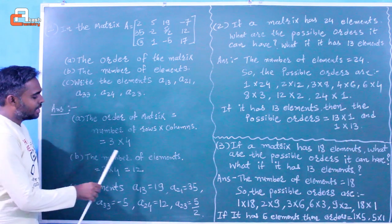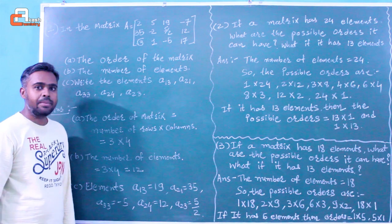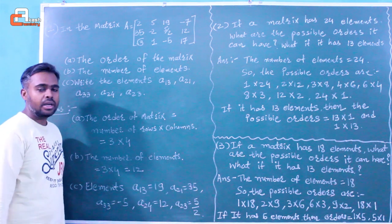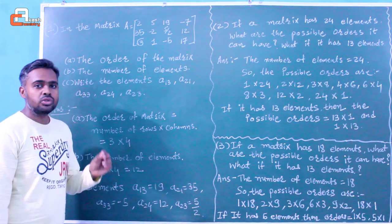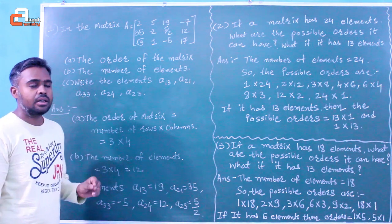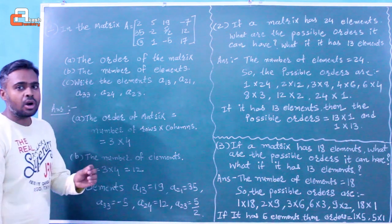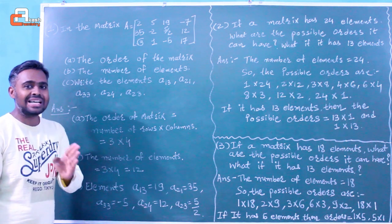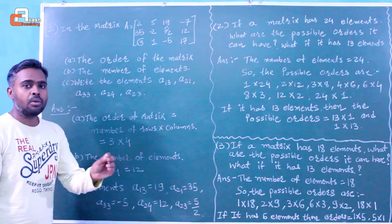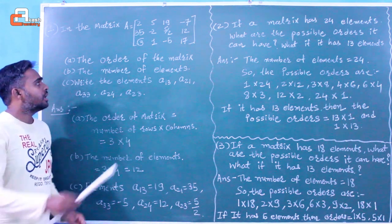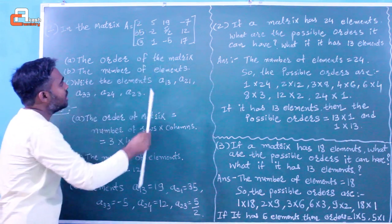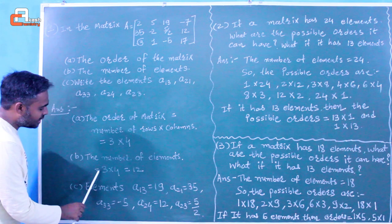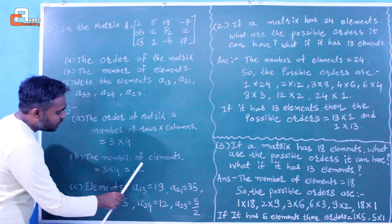We know that for any matrix the number of elements depends on the number of rows and columns. In general, for a matrix of order m cross n, the number of elements is m into n — that is, the multiplication of number of rows and number of columns. In our example there are 3 rows and 4 columns, so the total number of elements will be 3 into 4, that is 12 elements.